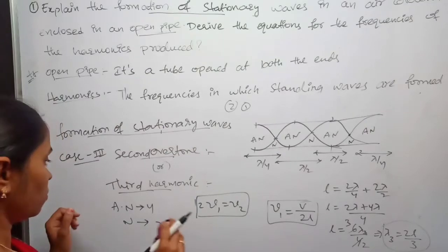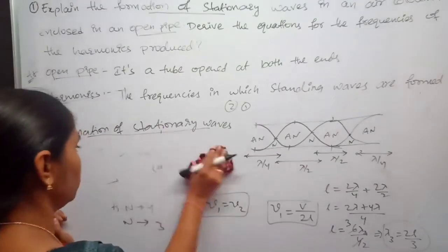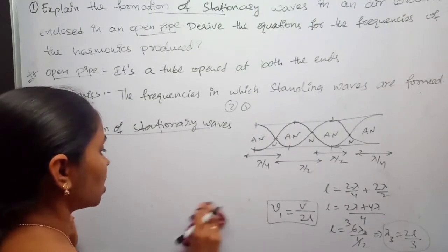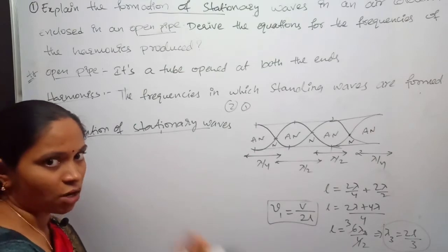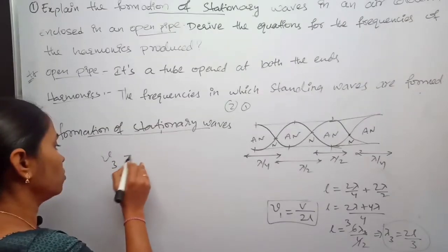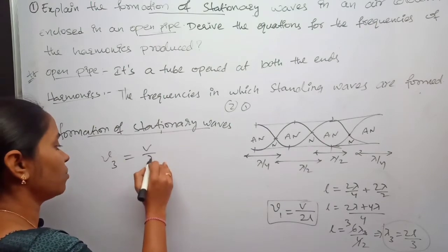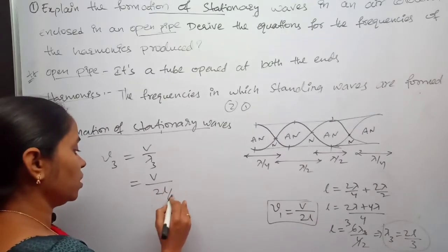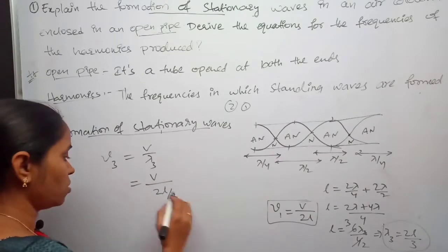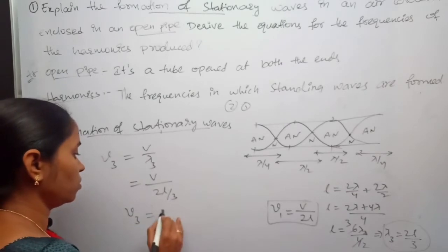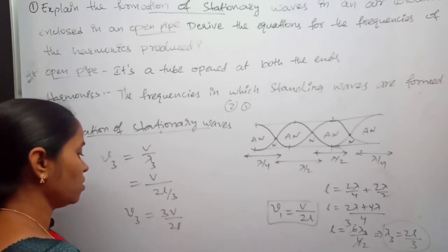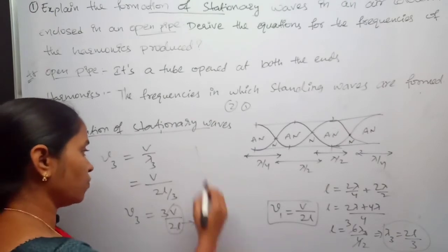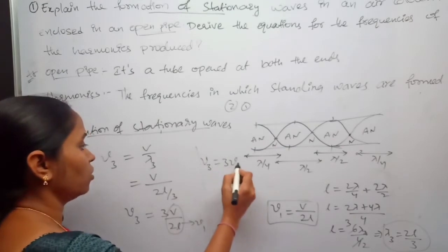Now finding the frequency of the third harmonic: ν₃ = V/λ₃ = V/(2L/3) = 3V/2L. Since V/2L = ν₁, we get ν₃ = 3ν₁. Therefore the third harmonic frequency is three times the fundamental frequency.